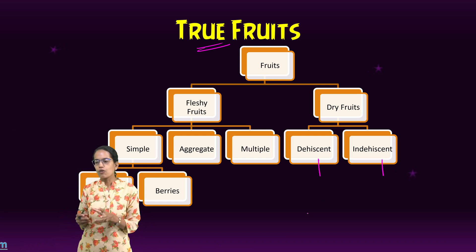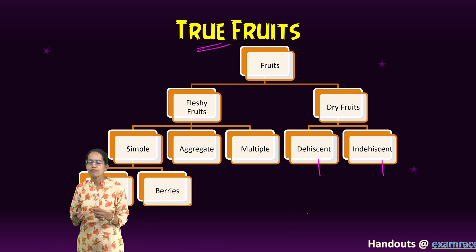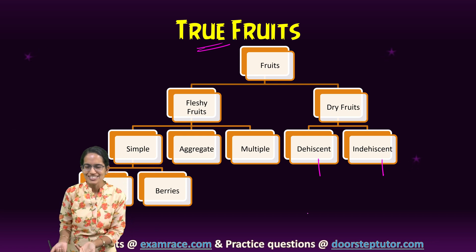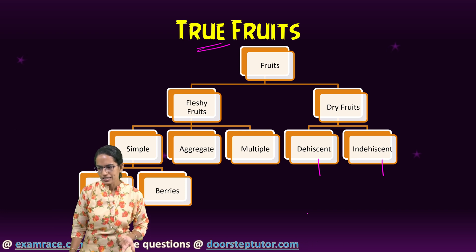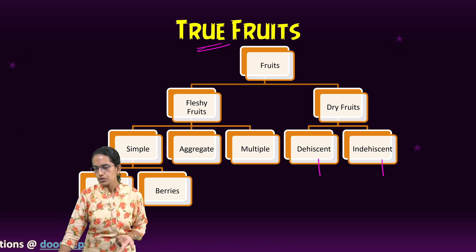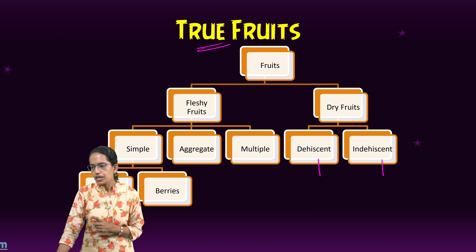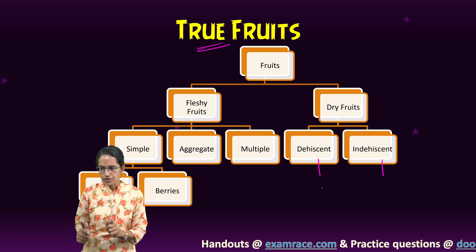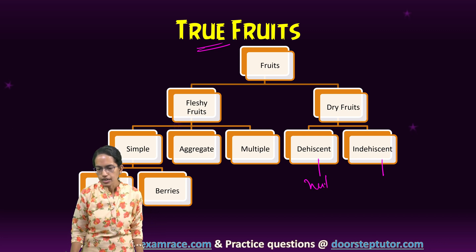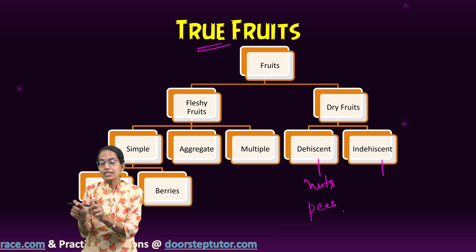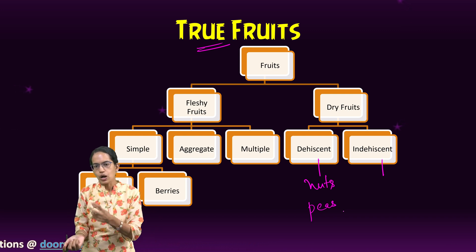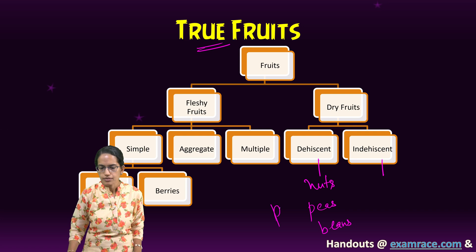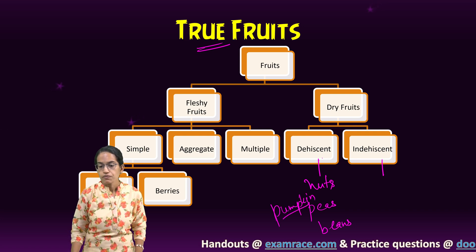Let's first understand dry fruits. These are the fruits we usually consume like raisins, walnuts, and peanuts — dried fruits as the name suggests. Under dry fruits, dehiscent means they have a covering over them. You open the covering and find the seeds inside. Good examples of dehiscent dry fruits are nuts, peanuts, beans, and pumpkin.